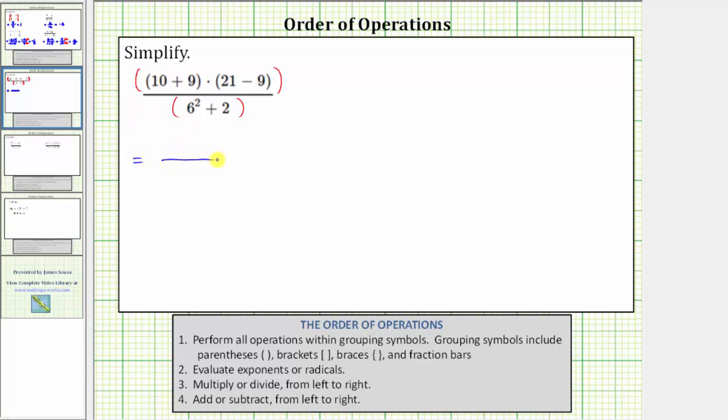Looking at just the numerator, we simplify within the innermost parentheses first. 10 plus 9 is equal to 19. 21 minus 9 equals 12. In the first step, the numerator simplifies to 19 times 12.